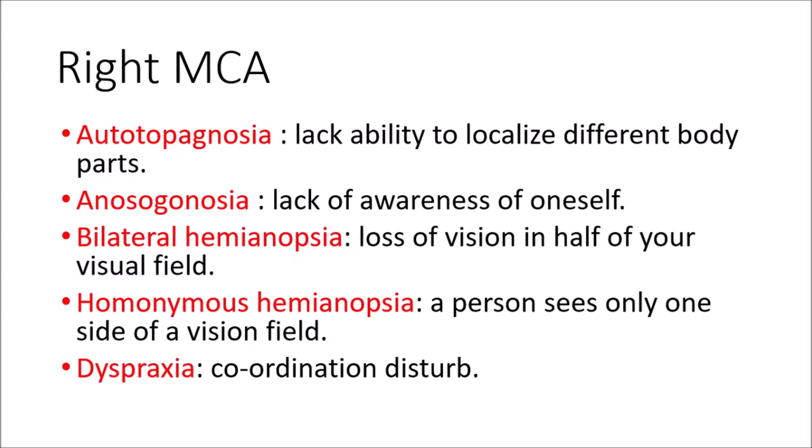Another sign is bilateral hemianopsia — loss of vision in half of your visual field on both sides. In this condition, mainly the peripheral vision of both sides is lost. Anything in your temporal field will not be visible to a person with bilateral hemianopsia, meaning the outer half of the vision is lost on both sides.